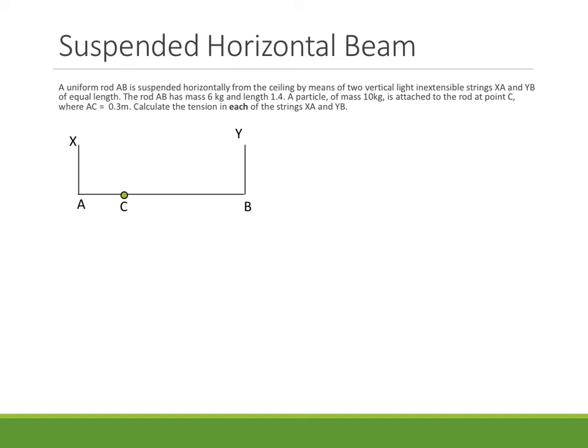Obviously because they're strings, we're going to have a tension in that string, which I'm going to call TA, and a tension in the other string, which I'm going to call TB. Now, the reason I've used these small letters is because the strings aren't connected, so therefore we can't assume that the tension is the same.